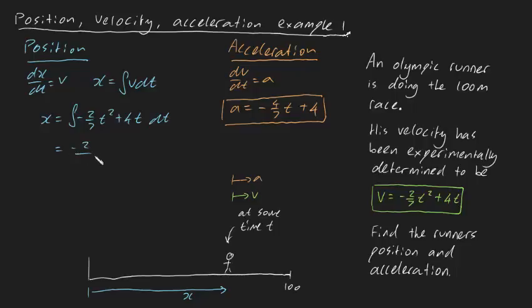This is going to be minus two over seven times three, which is twenty-one t cubed, plus four over two t squared. I'll just write that as two t squared, plus an integrational constant.